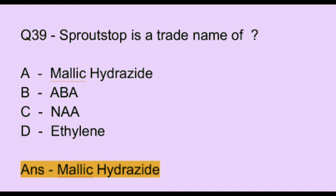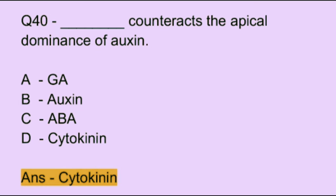Question number 39. Sprout Stop is a trade name of: Option A: malic hydrazide. Option B: ABA. Option C: NAA. Option D: ethylene. The correct answer is option A, which is malic hydrazide.